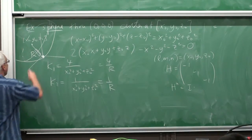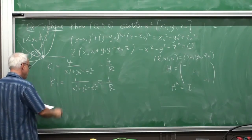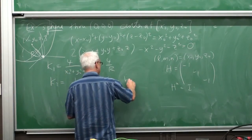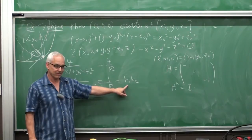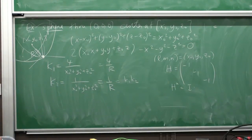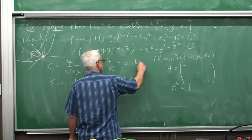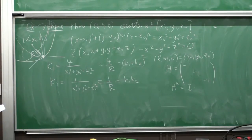In this case, the normal sections are all circles of radius √R. The curvatures of those sections are 1/√R each, and their product is 1/R — which matches K₂. Their sum is 2/√R, and when squared gives 4/R — which matches K₁. So the formulas work correctly for a sphere.